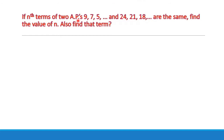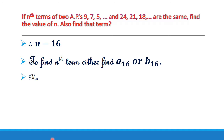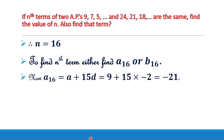Now we find the value of that term. Since N = 16, we find A16. A16 = A + (16−1)×D = 9 + 15×(−2) = 9 − 30 = −21. Therefore, A16 = B16 = −21. The 16th term of both APs is −21.